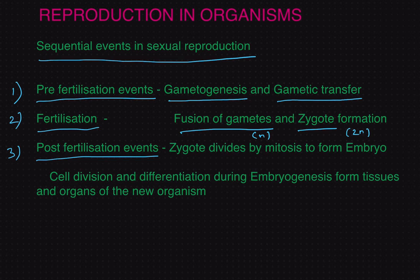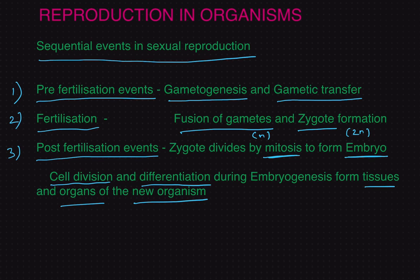After zygote formation, the events that follow are called post-fertilization events. The zygote divides by mitosis to form an embryo, and this embryo undergoes further cell division and differentiation to form the tissues and organs of the new organism.